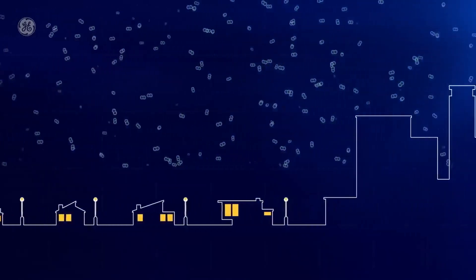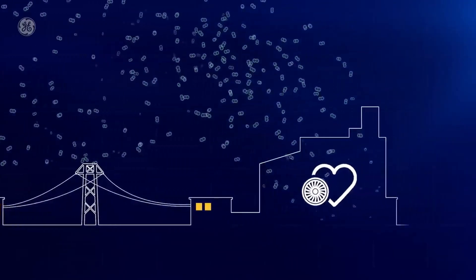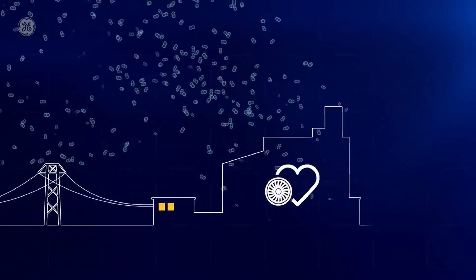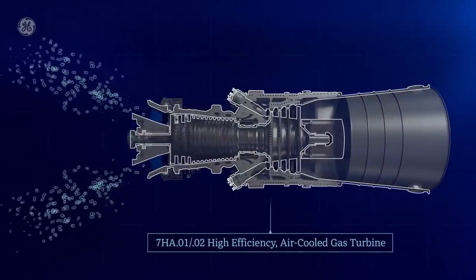If you follow the electricity you use at home or at work back through the power lines to your local power plant, you'll see that the process most likely starts with the work of the gas turbine, the very heart of the power plant. First, air is drawn in through one end of the turbine.